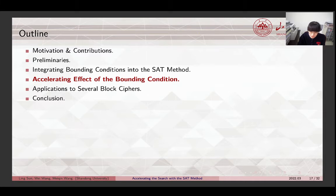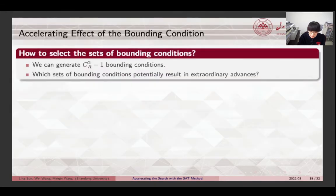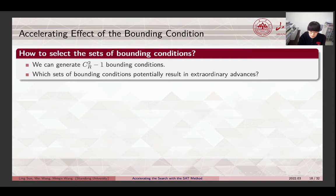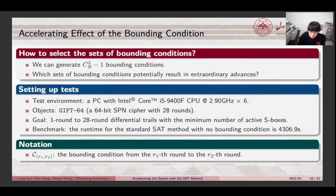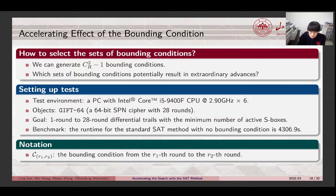In the next part, we will show the accelerating effect of the encoding method. Since we generalize the bounding condition, we can create CR2-1 bounding conditions. So, the problem is which sets of bounding conditions potentially result in extraordinary advances. The following tests are implemented on our PC. We take the distinguisher searching problem of GIFT64 as an illustration.